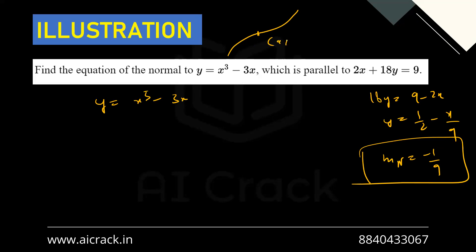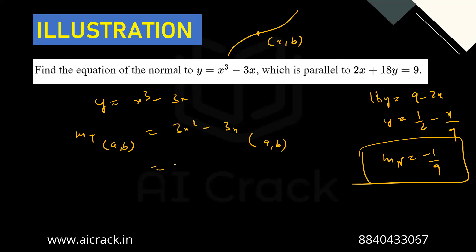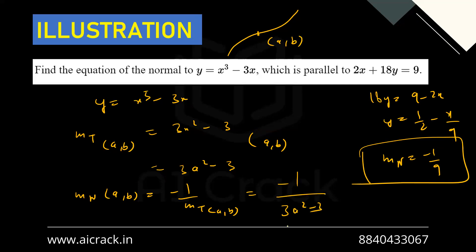For the curve y = x³ - 3x, assume the unknown point is (a, b). Differentiating gives y' = 3x² - 3, so m_t at (a, b) is 3a² - 3. Therefore m_n at (a, b) is -1/(3a² - 3).